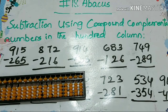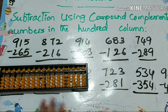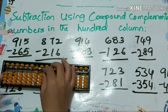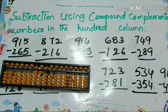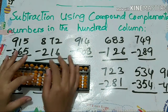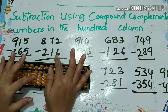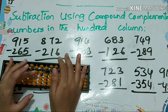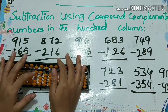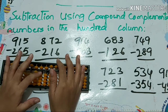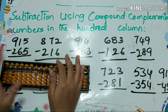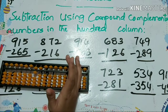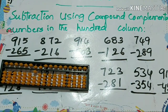First we will see 915 minus 265. So 915 minus 2 we can do directly, next minus 6 — papa down, mama down, baby's down — so for 6, 1 baby down. And minus 5 we can do by direct method. Answer: 650.